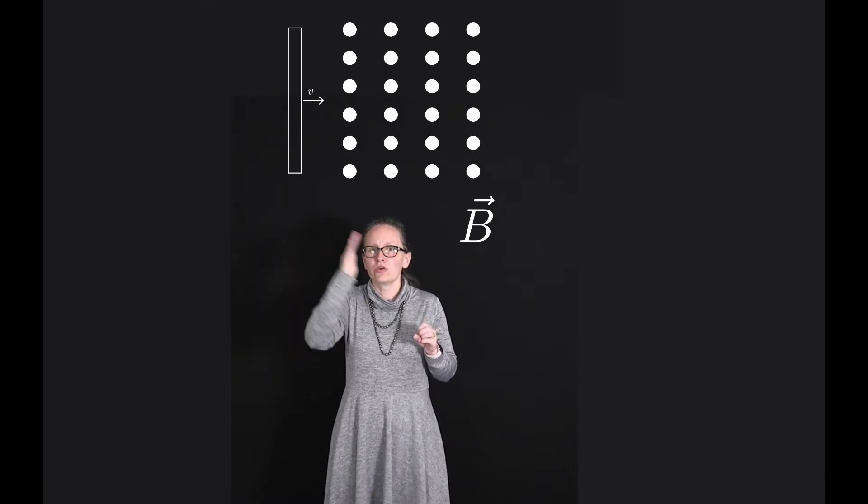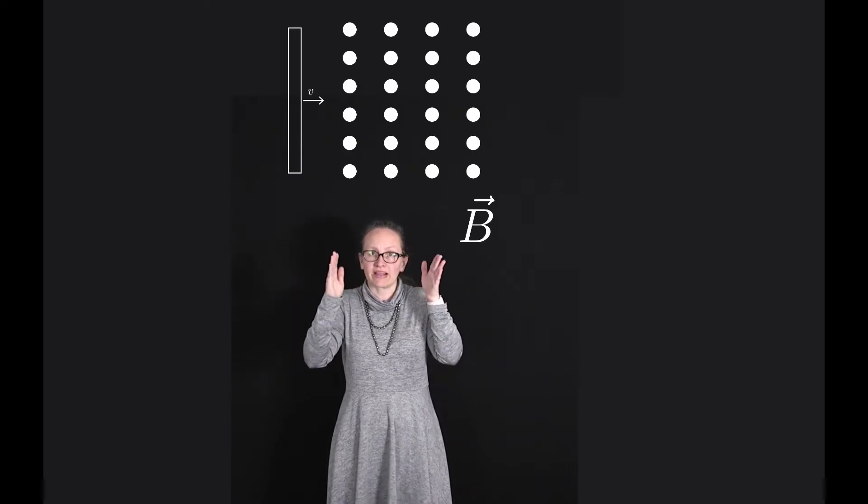We're now going to learn about why when we have a changing magnetic field inside a conducting loop, we get a current induced in that loop. In order to understand this, let's start by picturing a single conducting wire moving into a region with a magnetic field.